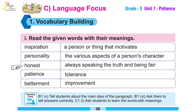Next word is honest. Honest میں H جو ہے وہ ایک silent letter ہے۔ Honest کا مطلب ہے: always speaking the truth and being fair — ہمیشہ سچ بولنے والا اور fair رہنے والا، اپنے معاملات کو سیدھا، صاف ستھرا رکھنے والا۔